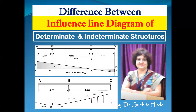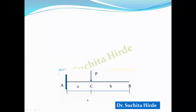First, let us revise what is meant by a determinate structure and what is meant by an indeterminate structure. Consider a cantilever beam fixed at A and free at B. At a fixed support, there are three reactions: a vertical reaction, a horizontal reaction, and a reactive moment. We have three equations of equilibrium — summation Fx = 0, summation Fy = 0, and summation M = 0. Therefore, it is possible to calculate all the reactions at the support using these three equations of equilibrium, and after calculating reactions, it is also possible to calculate shear force, bending moment, and all internal forces in the structure.